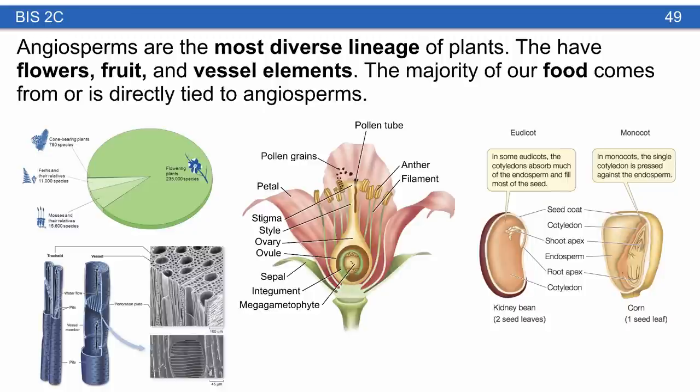Vessel elements in angiosperms are capable of transporting much more water than tracheids. Not all seed plants have vessel elements — just angiosperms and one group of gymnosperms, the gnetophytes. There are also differences between eudicots and monocots: eudicots have two embryonic seed leaves and monocots have just one. You can tell which is which when seeds germinate — eudicots show two leaves coming up and monocots show just one.